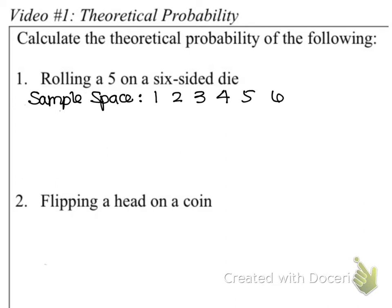From here I would take a look at, well, how many total items do I actually have? How many total different things could occur if I was rolling a six-sided die? Well, I have six different things, six different items in my sample space.